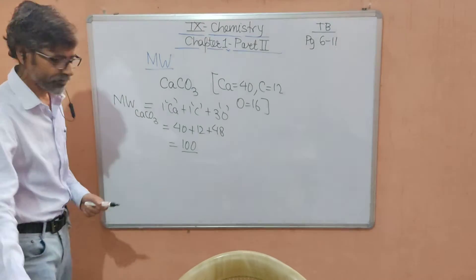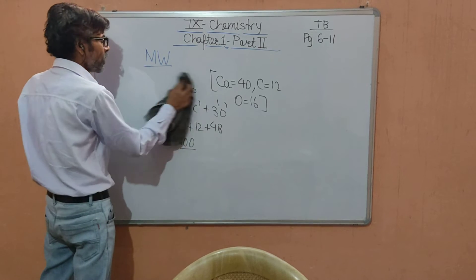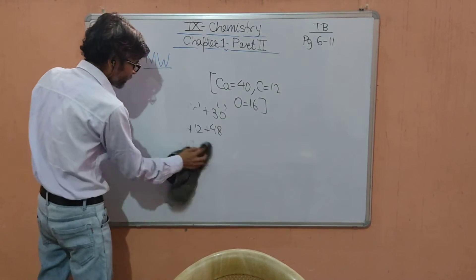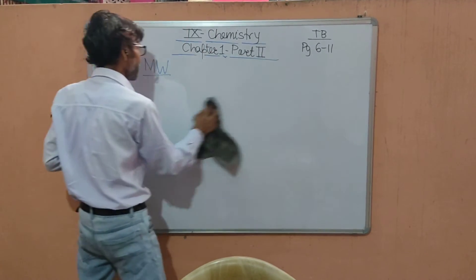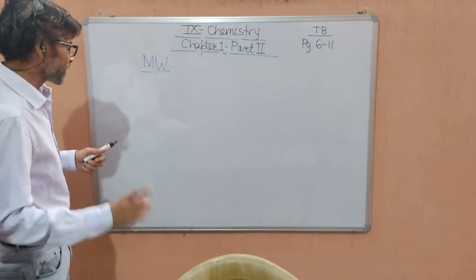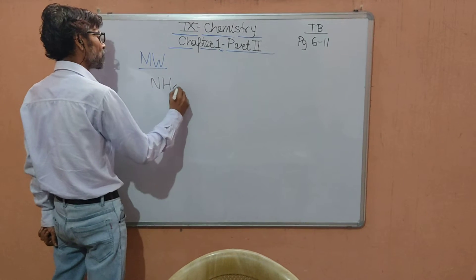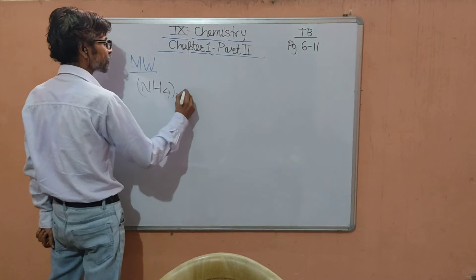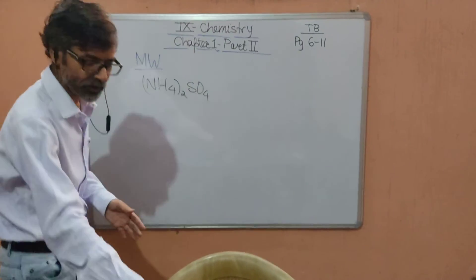So if we have anything in the bracket multiplied by a number outside, we calculate everything inside and then multiply by outside number. I'm demonstrating one more. Look carefully. If you have to find out the molecular weight of (NH4)2SO4, ammonium sulfate.